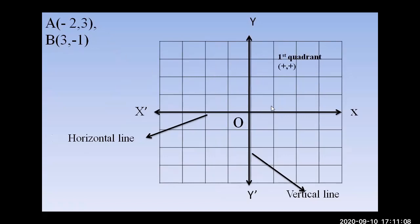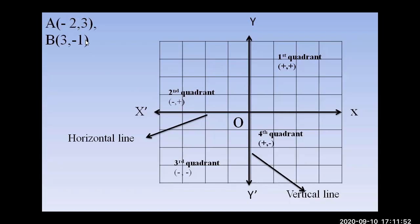When the vertical and horizontal lines intersect at O, the graph is divided into four quadrants. The first quadrant has plus-plus values, the second quadrant has minus-plus, the third has minus-minus, and the fourth has plus-minus. Point A is (-2, 3) — minus and plus — so it goes in the second quadrant. Point B is (3, -1) — plus and minus — so it goes in the fourth quadrant.